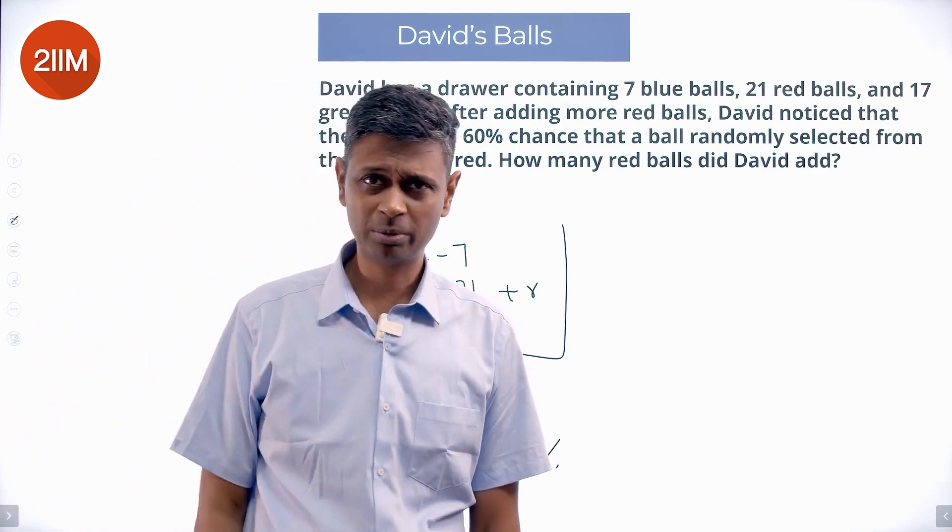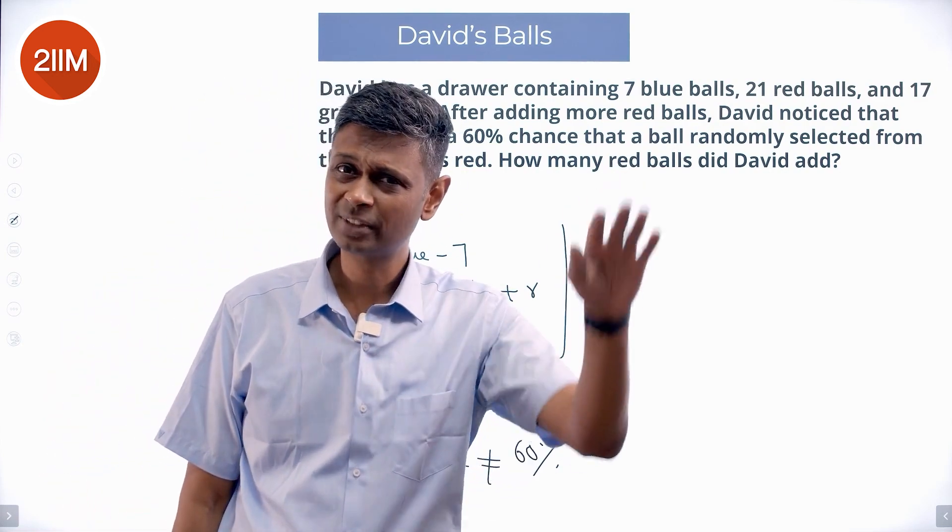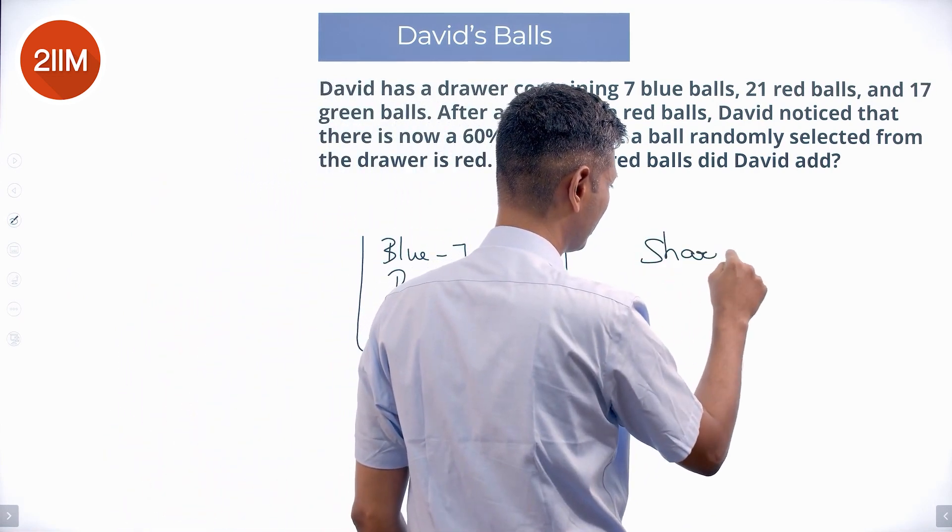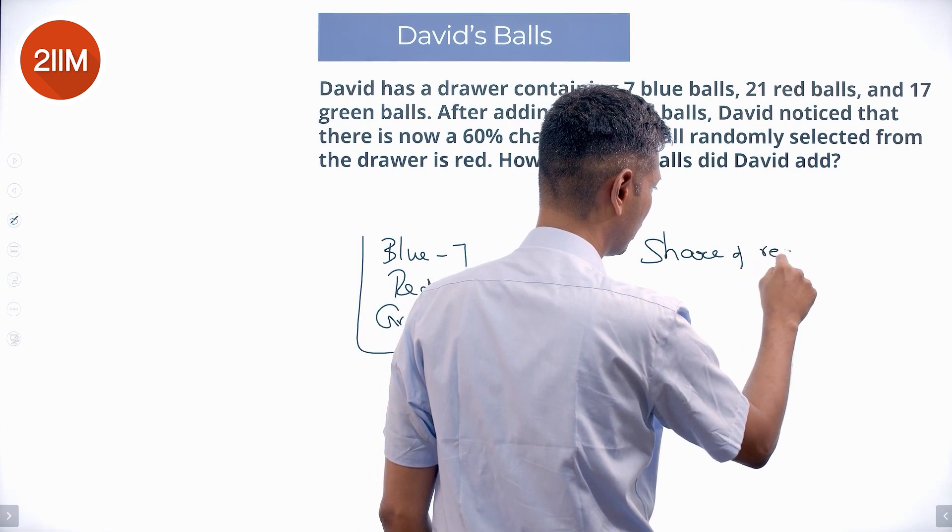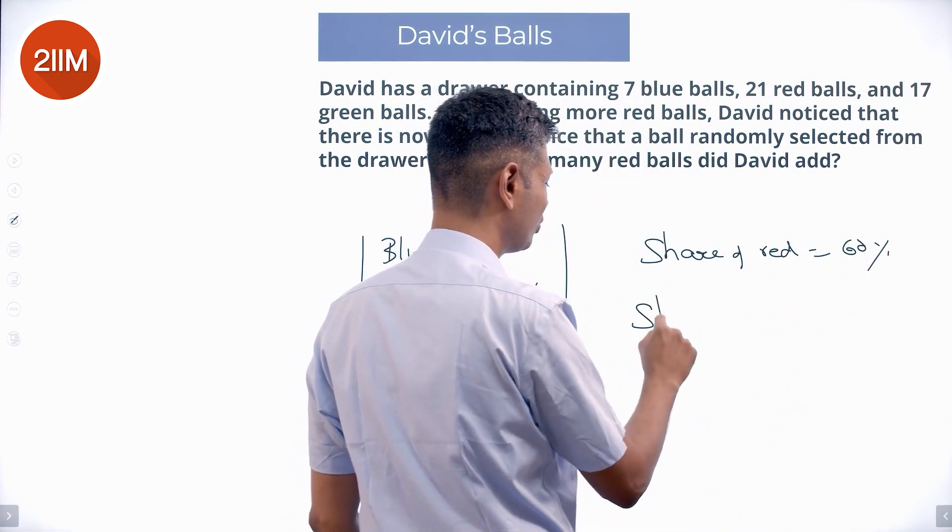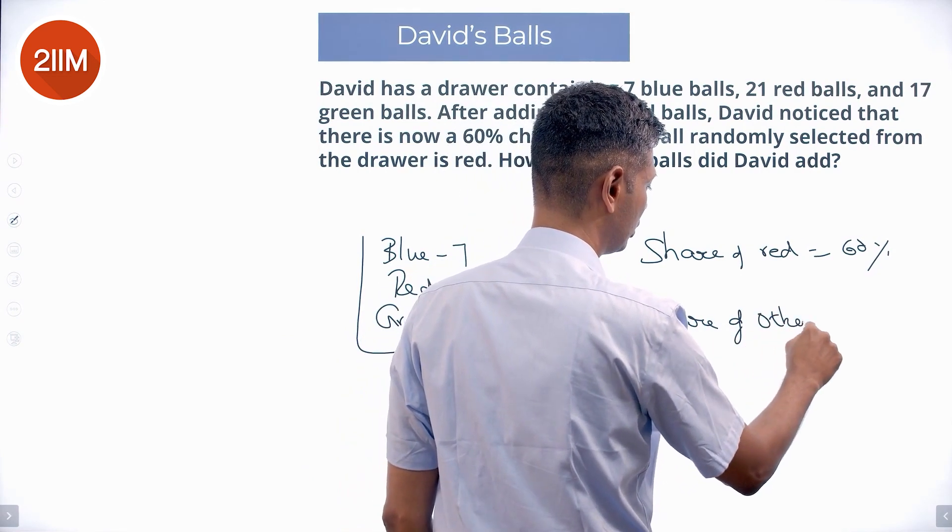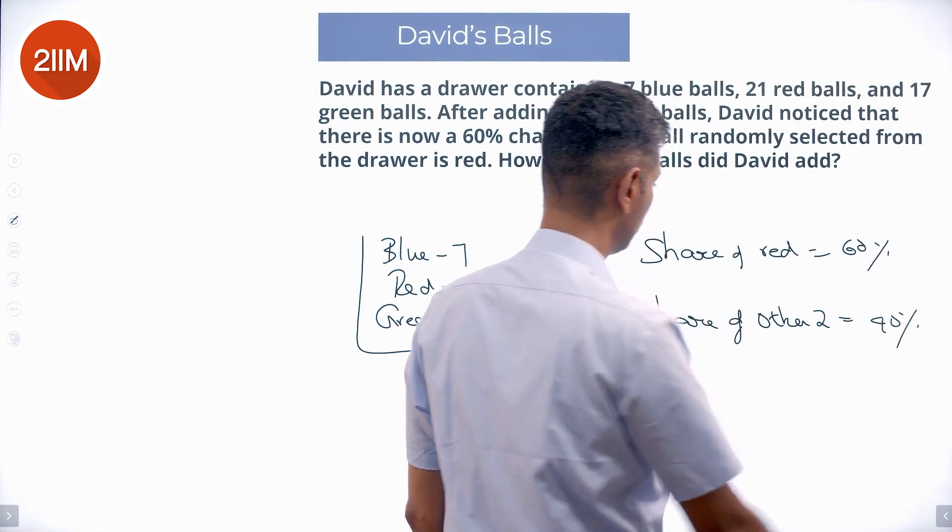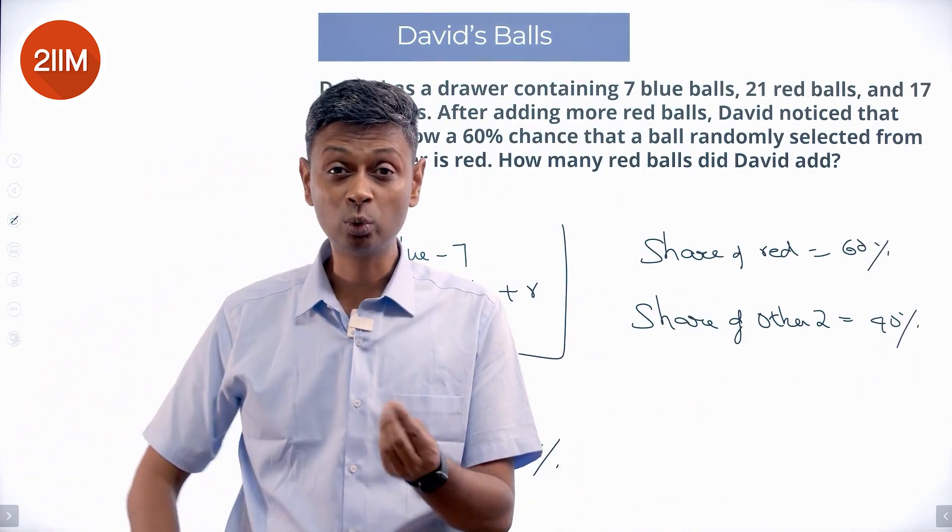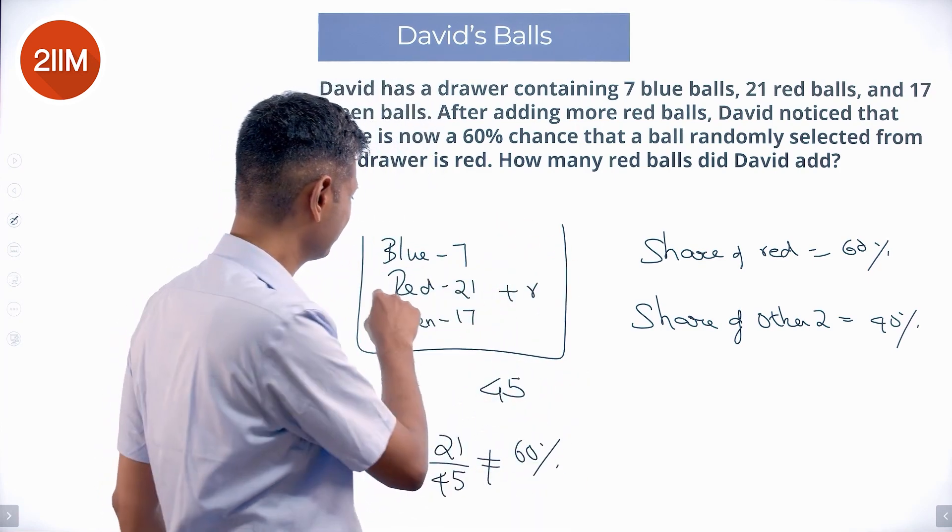I want to take it to 60%. So I can think about R and then simplify, I don't want to do that. I want to do this differently. So, share of red is equal to 60%. The share of others, the other two will be 40%. We have blue and green. If red has to be 60%, the other two will have to be 40%. I am not thinking about red, I will come to it later.